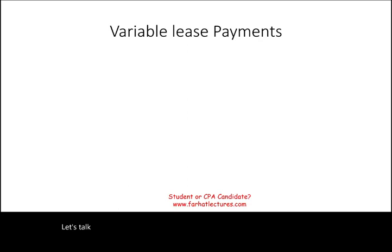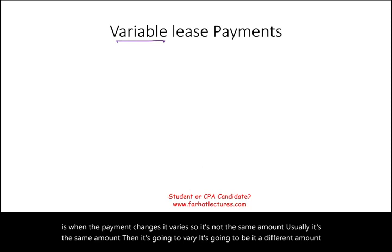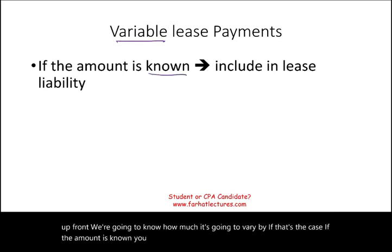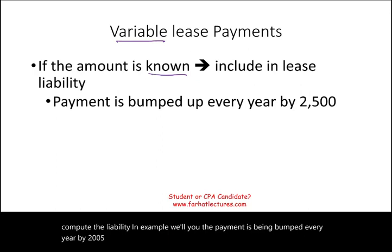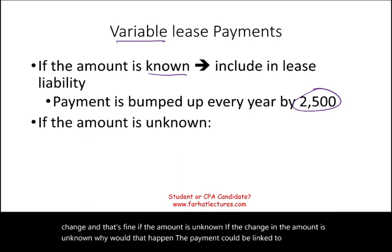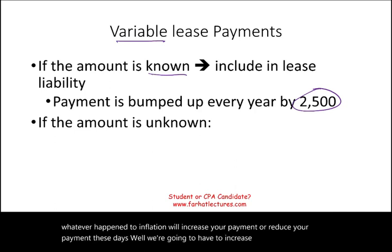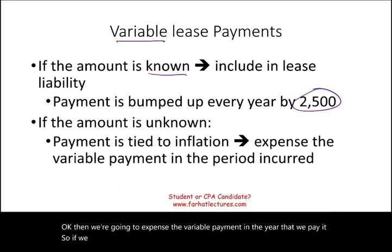Variable lease payments occur when the payment amount changes — it varies rather than staying the same. Sometimes we know the variance upfront; if the amount of change is known, such as the payment increasing by $2,500 each year, we include those payments in the liability when we compute it. If the change in amount is unknown — for example, when the payment is linked to inflation — then we expense the variable payment in the year that we pay it. Since inflation is going up, you would expense that extra amount as incurred.